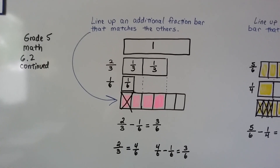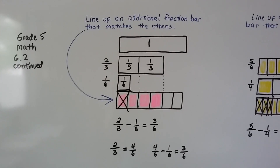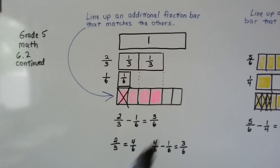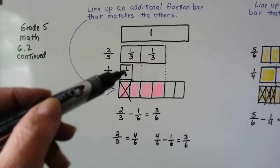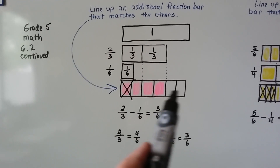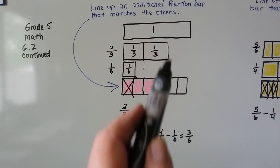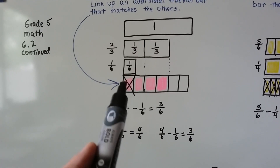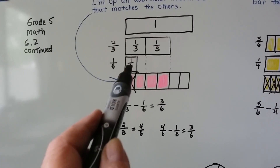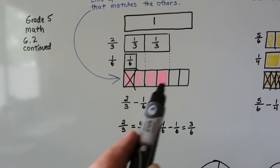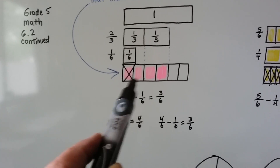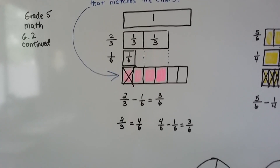So what we're doing is lining up an additional fraction bar that matches the others. If that's how big one whole is, then two-thirds would only be this much. If we have two-thirds minus one-sixth, we get a fraction bar that is in sixths and line it up to see where it would be with the two-thirds — four-sixths is the same thing as two-thirds. If we take one of these sixths away, we're left with three-sixths. That two-thirds is the same thing as four-sixths, so when we take the one-sixth away, we're left with three-sixths.